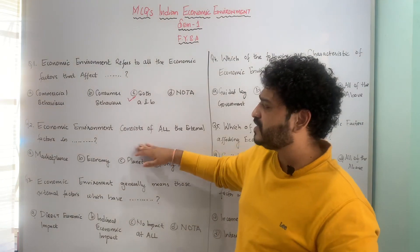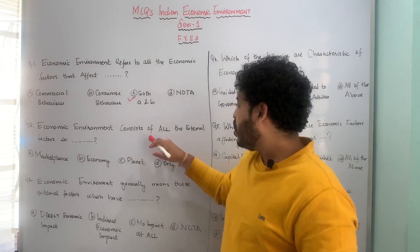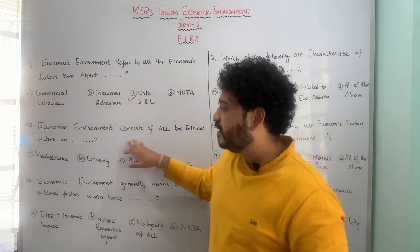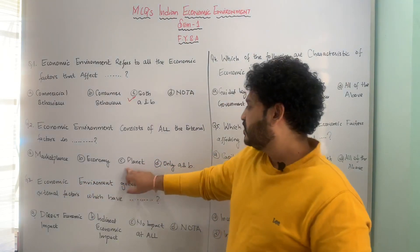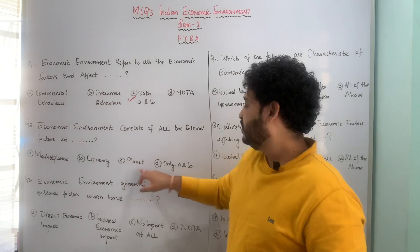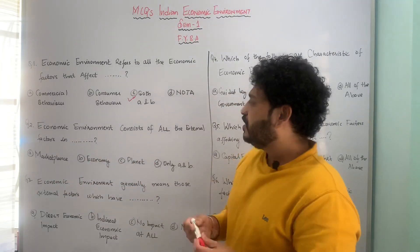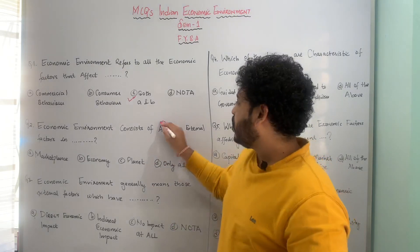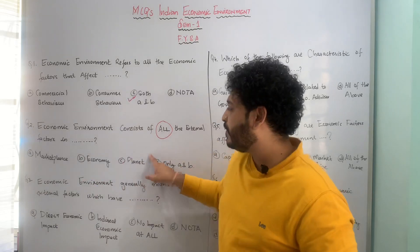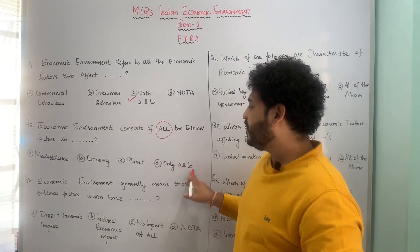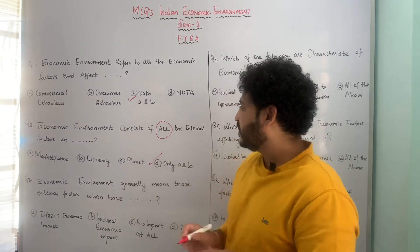The next MCQ: economic environment consists of all the external factors in — A: marketplace, B: economy, C: planet, D: only A and B meaning marketplace as well as economy. The correct answer is only A and B — marketplace and economy — not planet.